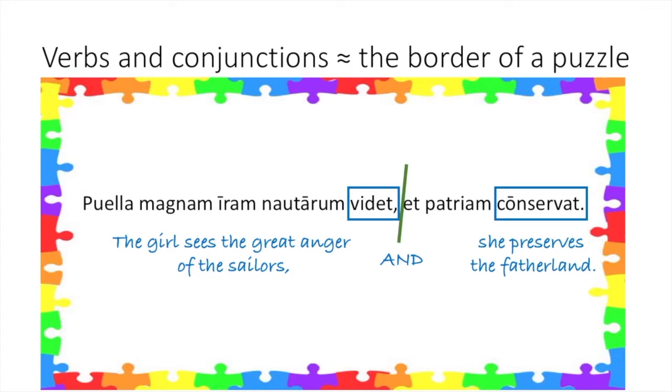Notice how puella is the implied subject of the second clause. Without a new nominative word, we use this context clue to understand the subject to be puella from the first clause.